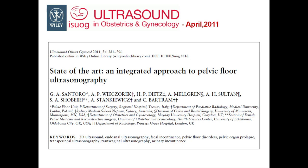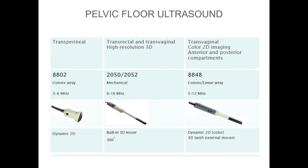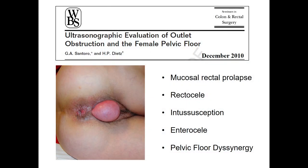We introduced the term integrated approach to pelvic floor ultrasonography — meaning a combination of different probes and modalities to assess all aspects of the pelvic floor. Three main probes: we saw today two of these probes — electronic and rotating probes — but we also have a convex probe for transperineal ultrasound. I published this study with Peter Dietz, a urogynecologist from Australia who has published a lot on this topic. Using ultrasound, we can detect all the mechanisms behind the same symptom of outlet obstruction.